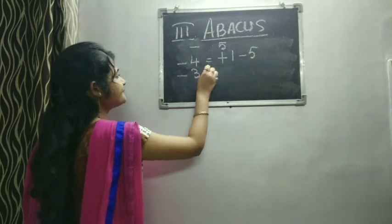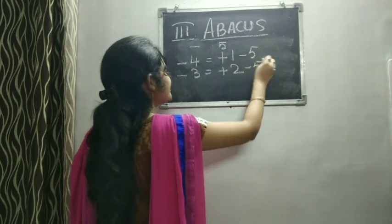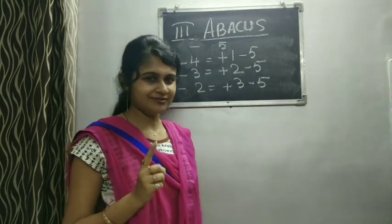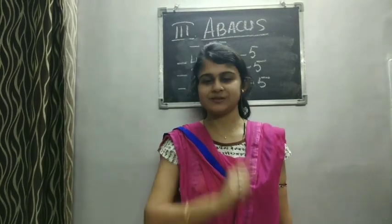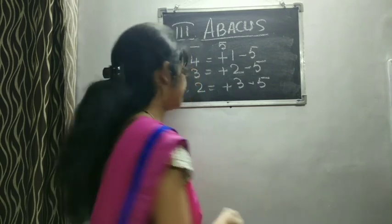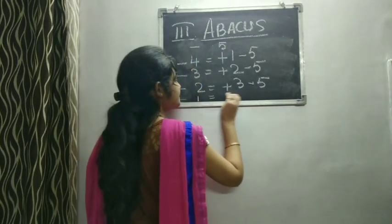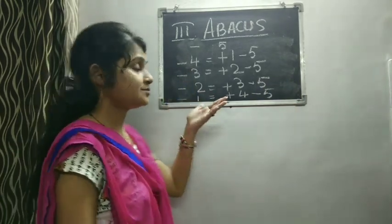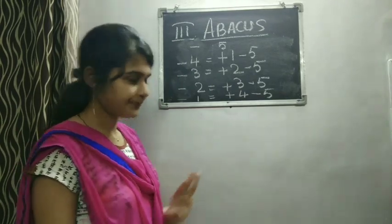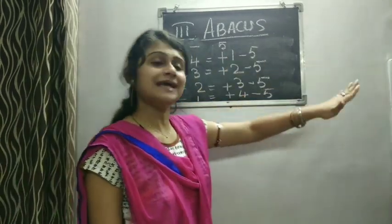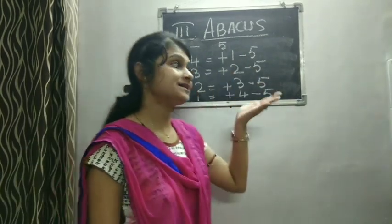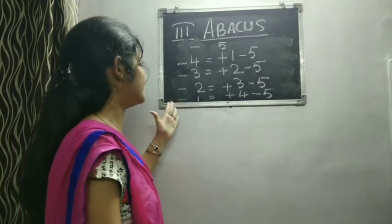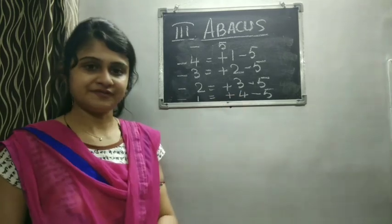Then minus 3 means plus 2 minus 5. Minus 2 means plus 3 minus 5. Please repeat after me as I say. And minus 1 equals plus 4 minus 5. The same goes for 10's place - we just add a zero. Minus 40 equals plus 10 minus 50; minus 30 equals plus 20 minus 50; minus 20 equals plus 30 minus 50; minus 10 equals plus 40 minus 50.